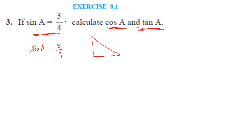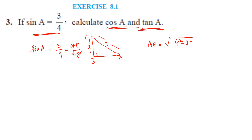The concept is to draw one triangle. Let's say this is a triangle, angle A, B, and C. Sine is opposite by hypotenuse, so the opposite side is 3 and hypotenuse is 4. The third side AB will be under root of 4 squared minus 3 squared, which equals under root of 7.